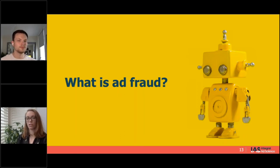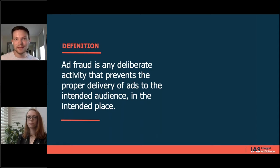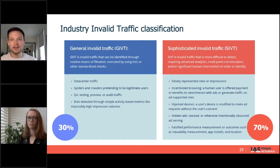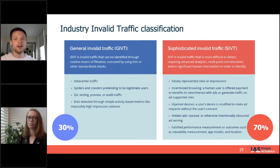At IAS we define ad fraud as any deliberate activity that prevents the proper delivery of ads to the intended audience in the intended place. That's a broad definition because there are so many different types of fraud. There are ongoing efforts in the ad industry to align on how we talk about fraud — you'll often hear it referred to as invalid traffic or IVT. The two industry-standard classifications are GIVT (General Invalid Traffic) and SIVT (Sophisticated Invalid Traffic). Importantly, 70% of the invalid traffic we see is that sophisticated traffic — it's harder to detect because it behaves more like a human would.